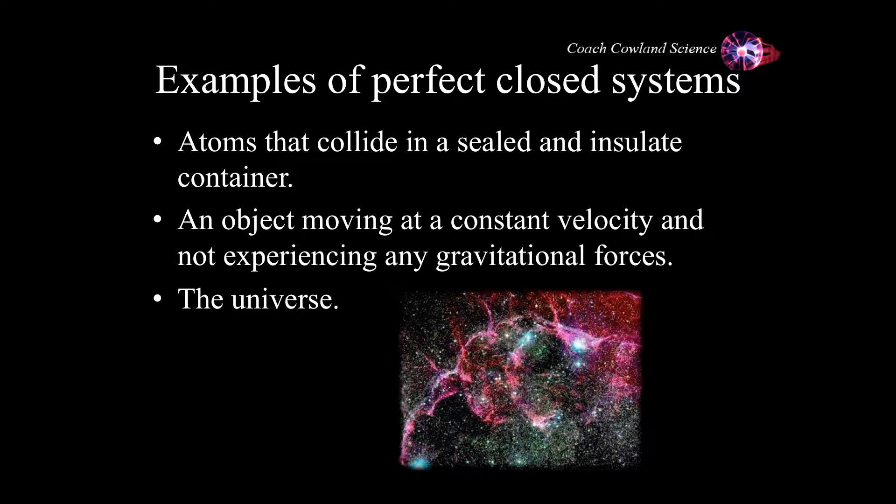Like I said, there's not very many examples of perfectly closed systems, but you could say that if there's no forces applying to atoms that are inside a perfectly sealed and insulated container, then that could be considered a closed system. Any object that's moving at a constant velocity is not experiencing any gravitational forces. This is an extremely rare scenario. Maybe you have something on a perfectly horizontal table and because of that it's not experiencing the gravitational force of the Earth, and obviously there would have to be no friction.